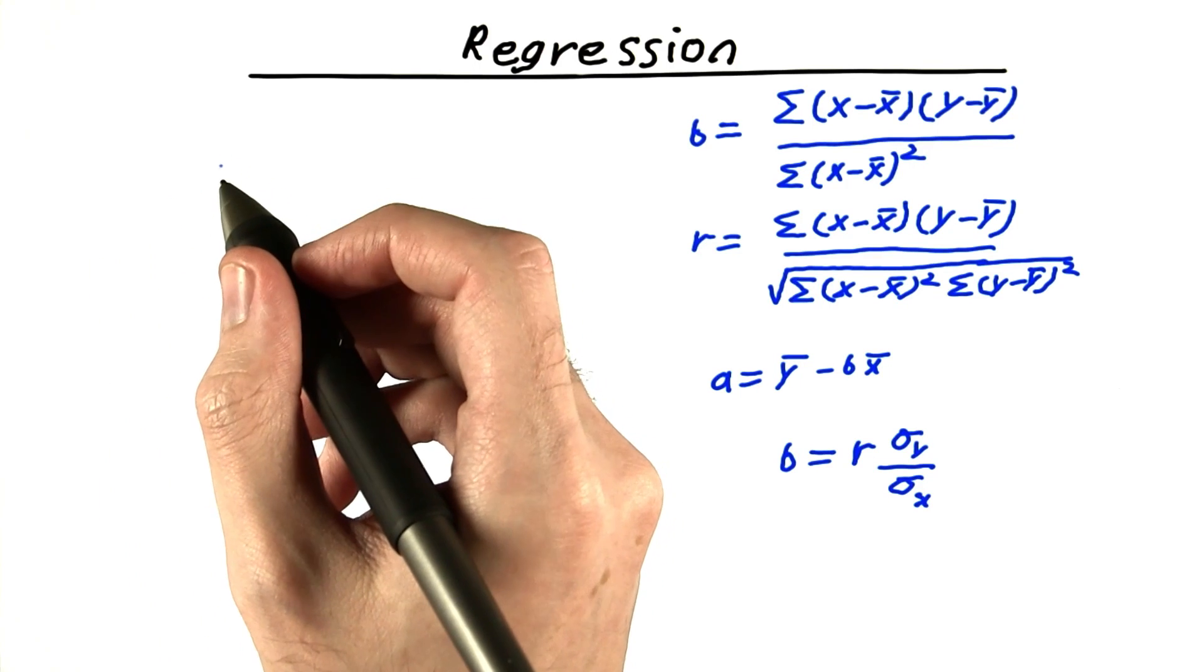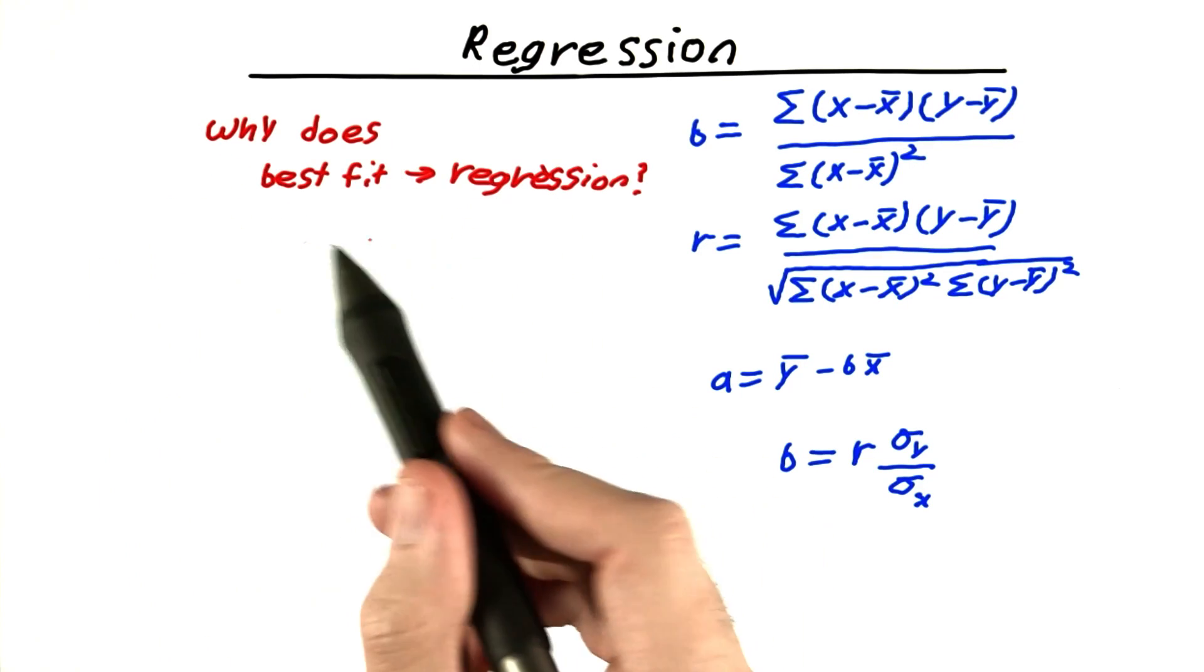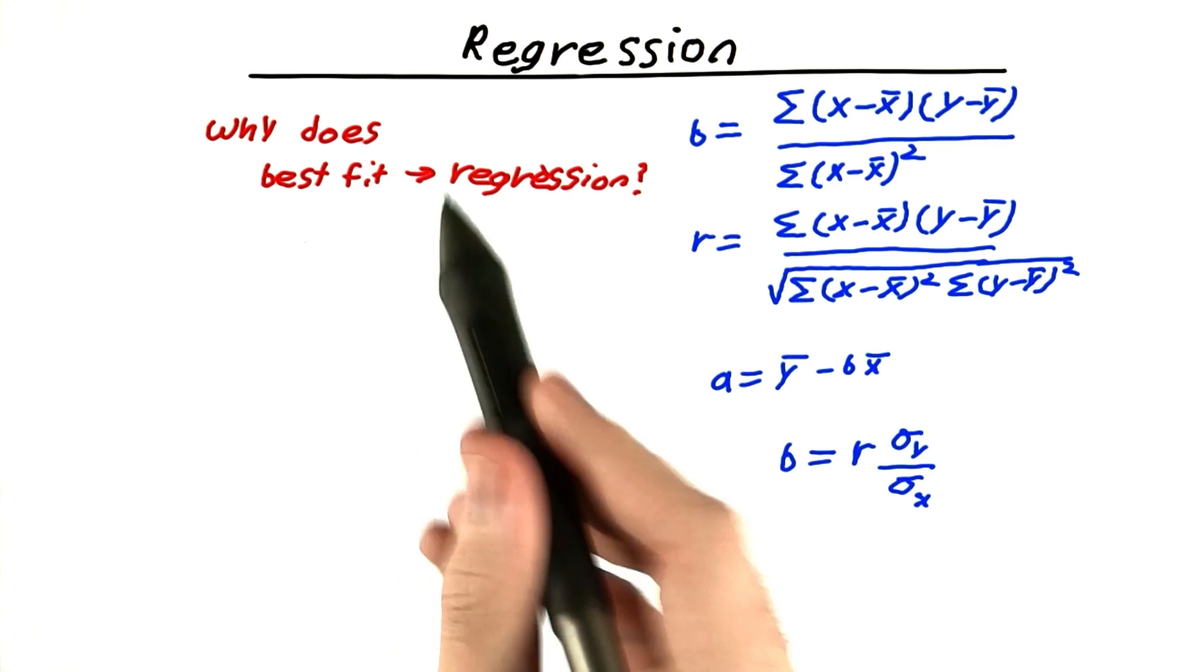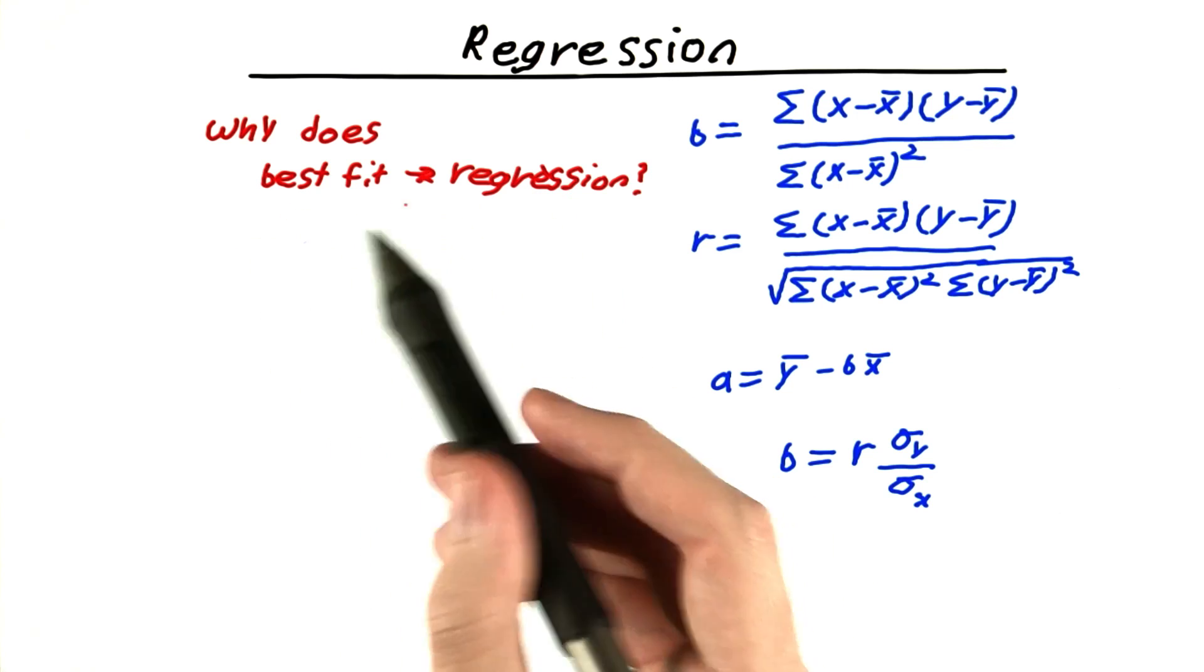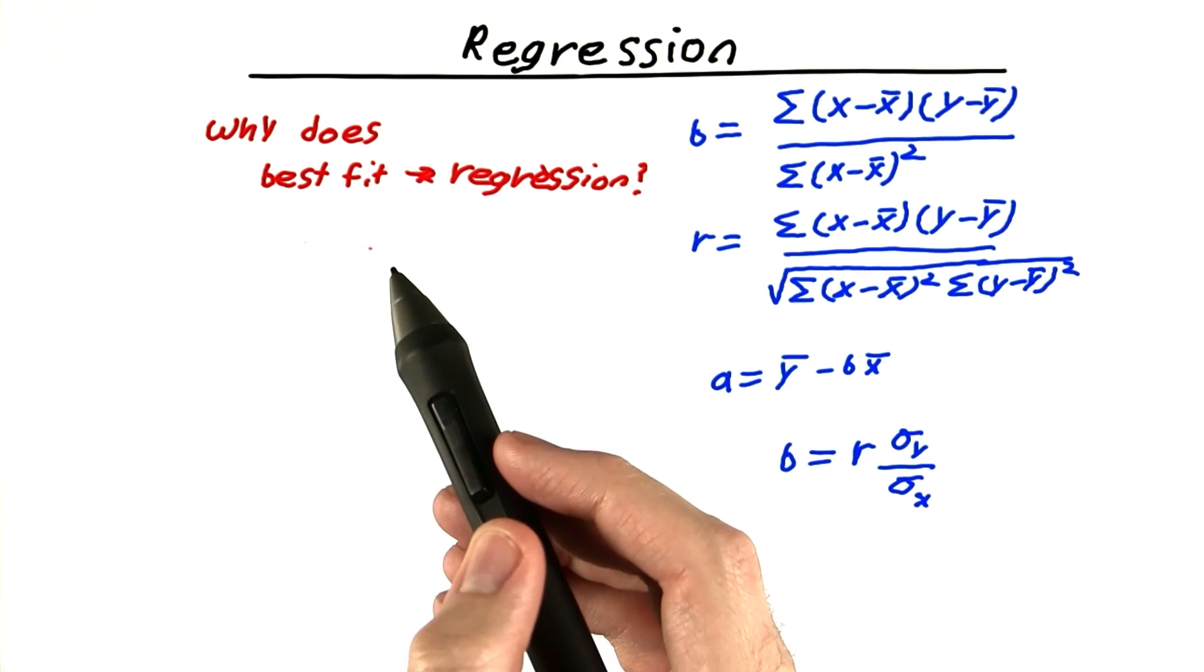Now I'd like to ask you a tricky question about regression that will illustrate why regression got its name. Why is this thing that gets us the best fit of a line, what does that have to do with regression going backwards?